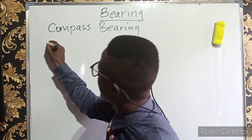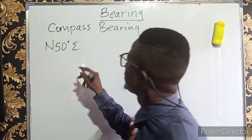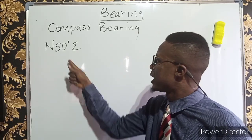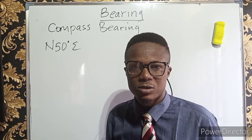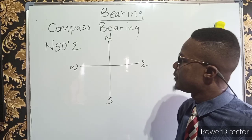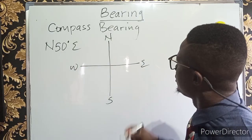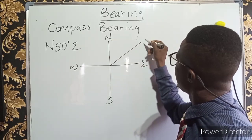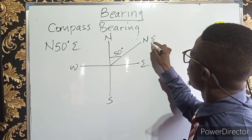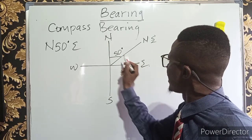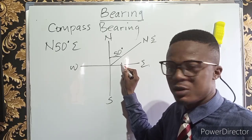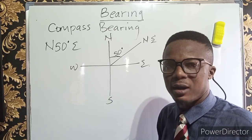Let's say we have 50 degrees east of north. This is a compass bearing because it makes reference from either the north or south. If I want to represent this in the Cartesian plane, I draw a cardinal point. 50 degrees east of north is located in the northeast region — between north and east. The angle must always be attached to the north or to the south as the case may be. Don't place the angle in the middle; measurement must begin either from north or from south.